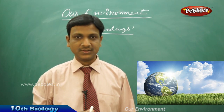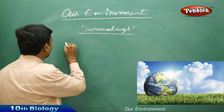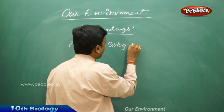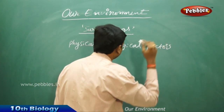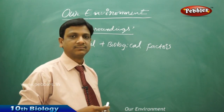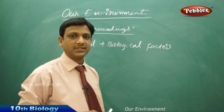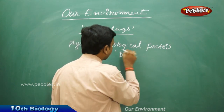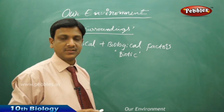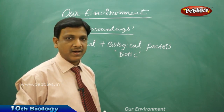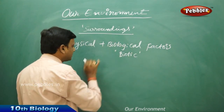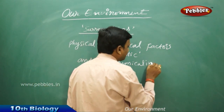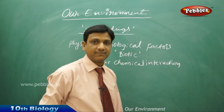So technically, in science, in a more defined way, the environment can be described as the sum of physical and biological — or biotic — factors. Physical factors include land, air, water, sunlight, and temperature. Biological factors are the biotic components — other living organisms which comprise plants, animals, and microorganisms. Along with these, there are also chemical interactions.